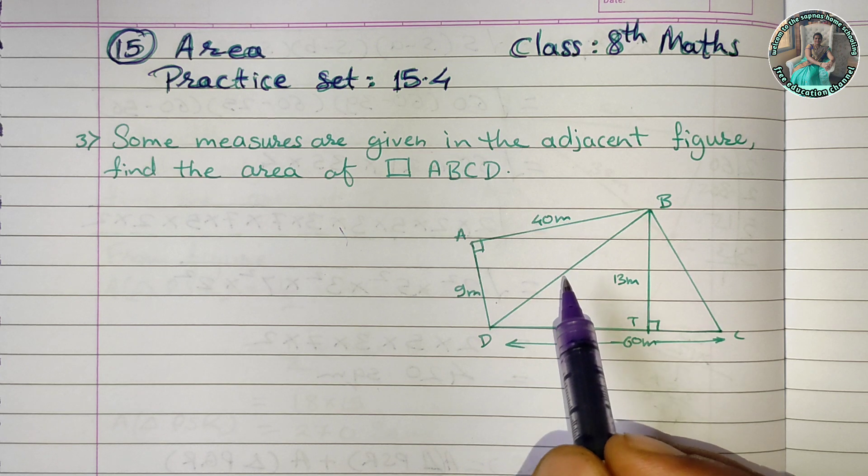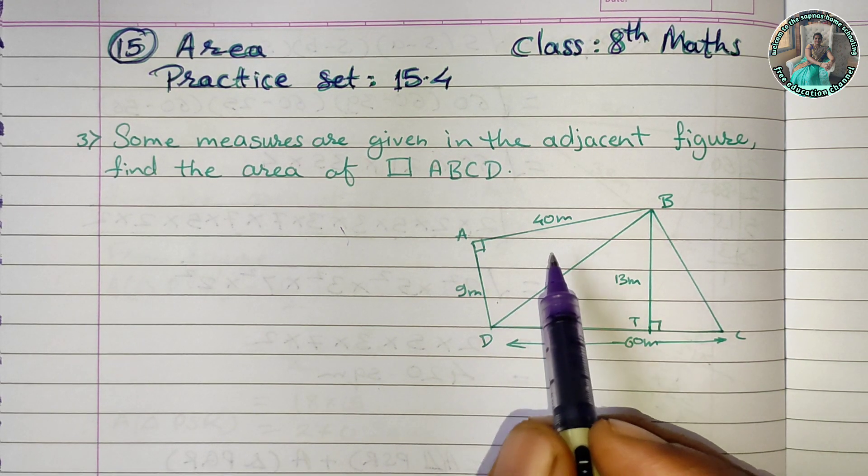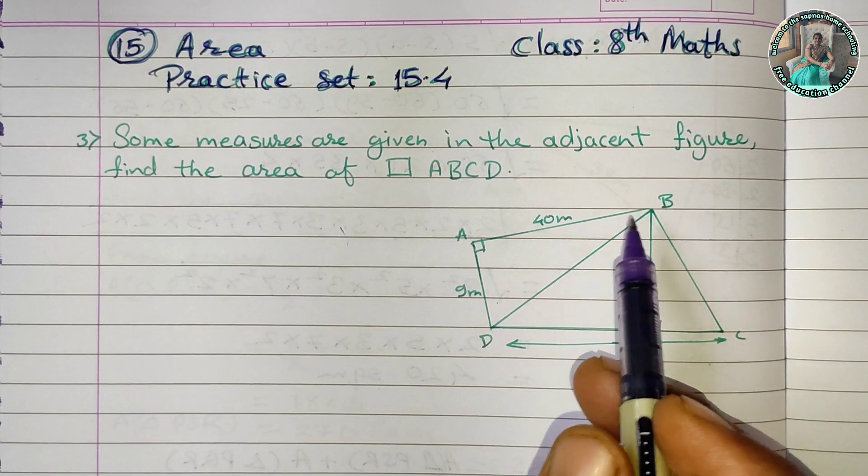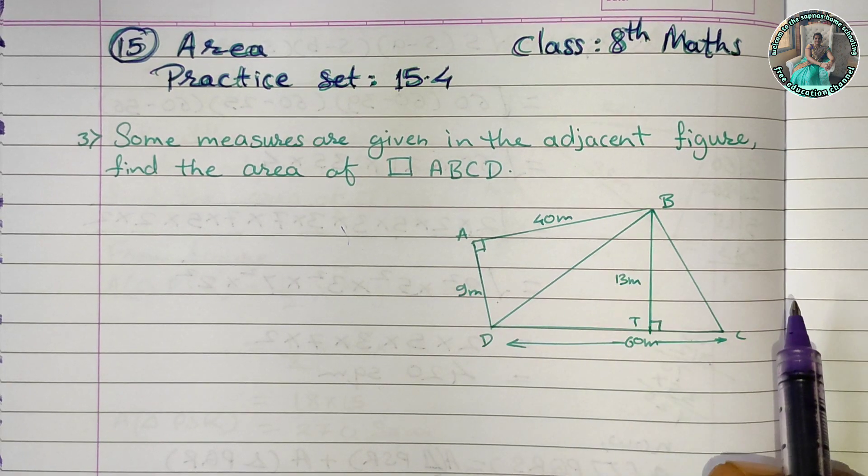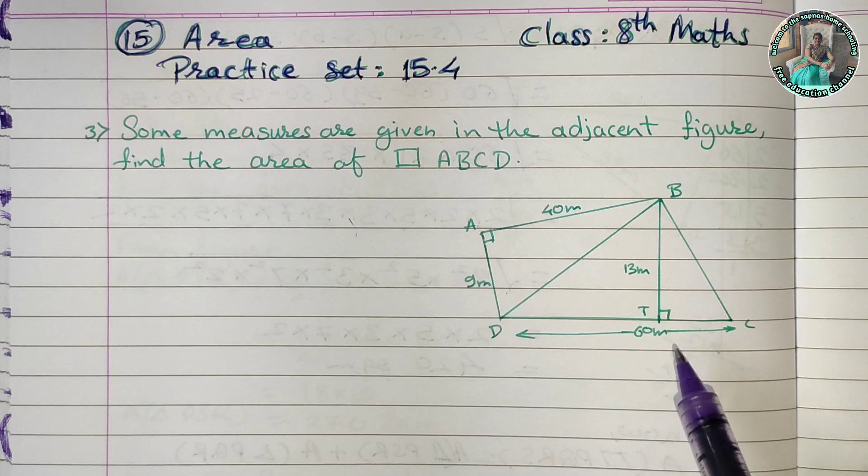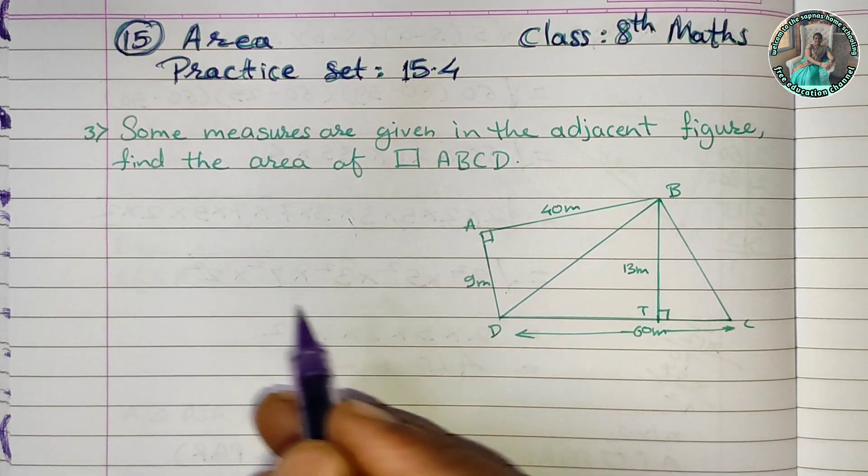These triangles, we find the areas, then we add them to get the quadrilateral ABCD area. For the first triangle, we take the area formula. Using the normal formula with three sides will be complicated.